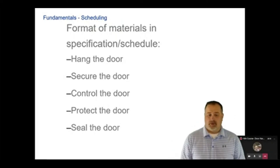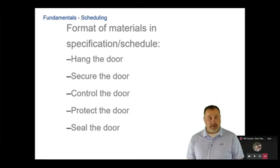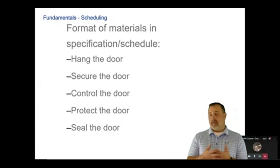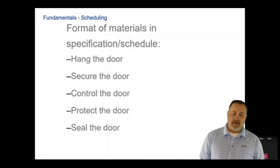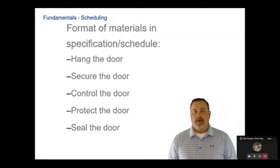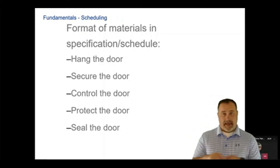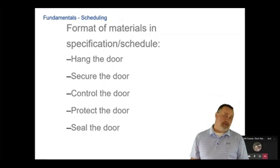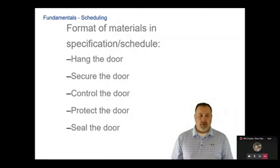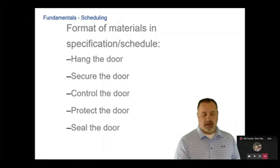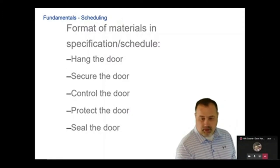Then you protect the door using kick plates, push and pull plates, edge guards, and things like that. Lastly, you seal the door using gasketing around the opening. If the opening is either sound rated or fire rated, you would need to seal that opening so it can properly operate.